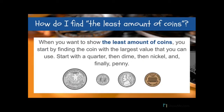So how do we find the least amount of coins? When you want to show the least amount of coins, you start by finding the coin with the largest value that you can use. So you start by looking at the quarter, then the dime, then the nickel, and then finally the penny. Remember: a quarter is worth 25 cents, a dime is worth 10 cents, a nickel is worth 5 cents, and a penny is worth 1 cent.